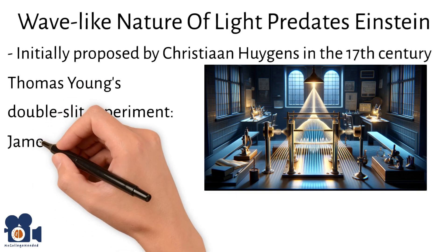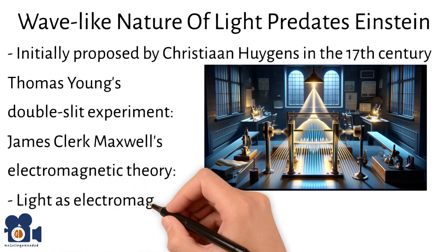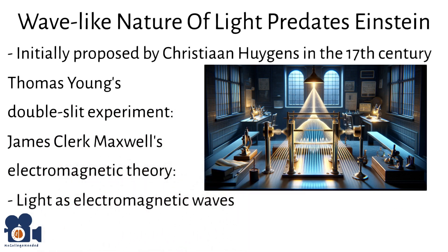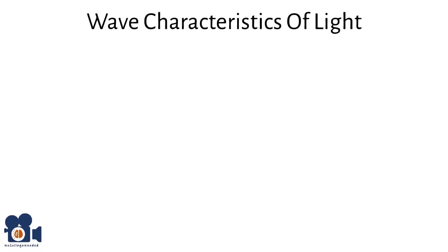Later, James Clerk Maxwell's electromagnetic theory, which describes light as electromagnetic waves, further solidified our understanding of light's wave properties. The wave characteristics can be broken down into two categories, wavelength and frequency.